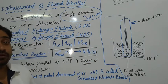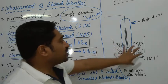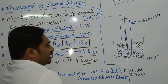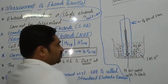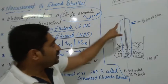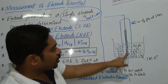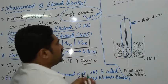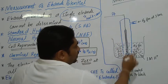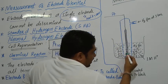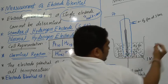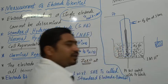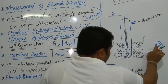First, we have to write the construction of the standard hydrogen electrode. In a standard hydrogen electrode, we take a glass electrode. This glass electrode is equipped with a platinum wire, which is inserted into it. This platinum wire is attached with a platinum foil — a platinum metal piece.